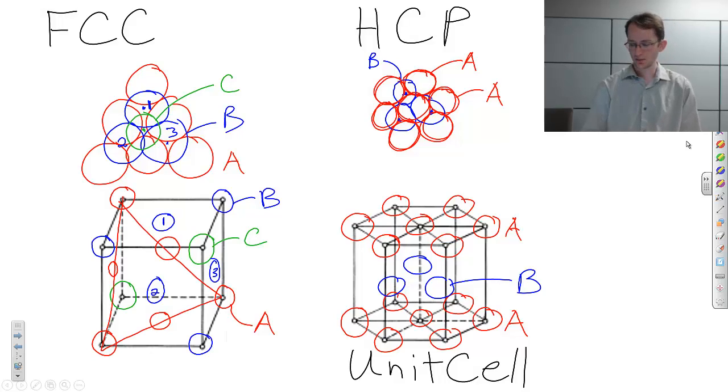You can see the A plane goes like this—that's the close-packed A plane. The B plane goes like this, and the C plane will be on top of that. You notice that the ABC pattern goes between the opposite corners of the face center cubic unit cell.